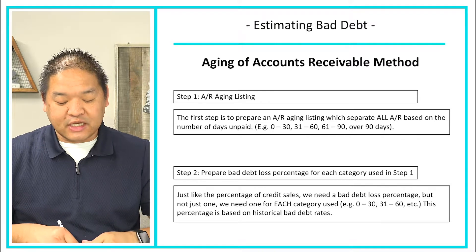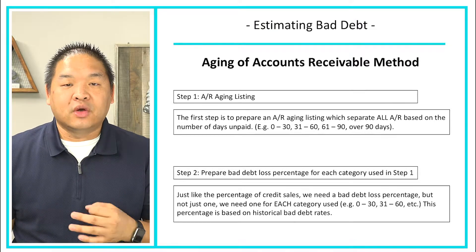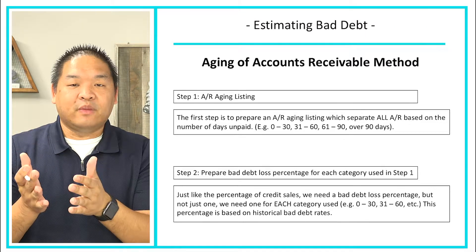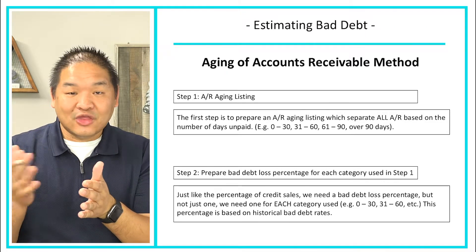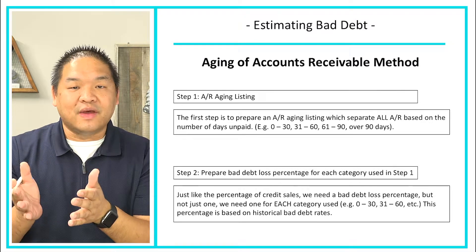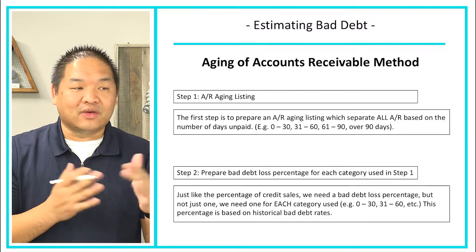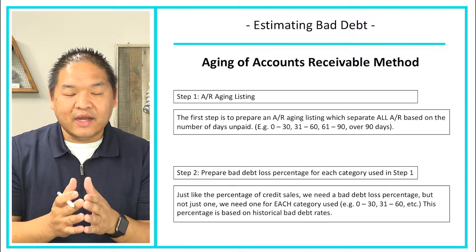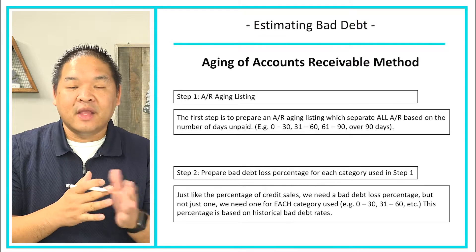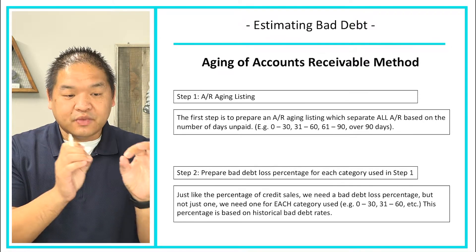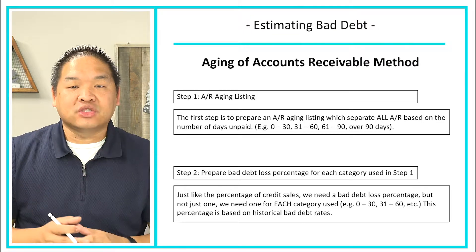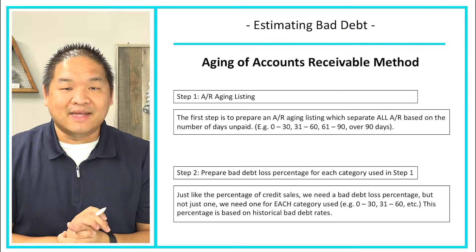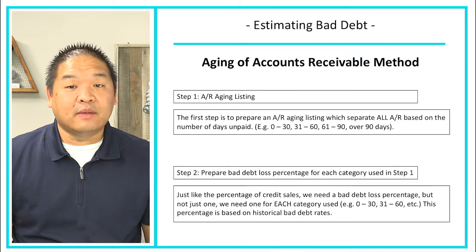Step two is to prepare a bad debt loss percentage for each category from step one. The logic is: what's the likelihood of not collecting a zero-to-30-day receivable? It's still within the net-30 terms, so you'll likely collect most of it. But something 90 days late is much less likely to be collected. So we apply a greater percentage to the over-90 block than to the under-30 block. Each block gets its own percentage based on historical collection data.